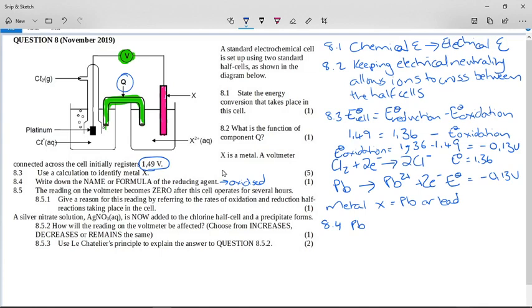8.5 says the reading on the voltmeter becomes zero after the cell operates for a few hours. Give a reason for this reading by referring to the rates of oxidation and reduction half reactions. Now I drew this with a forward arrow, but as you know from the table all of these are reversible reactions and so all reversible reactions can reach equilibrium. When this reaches equilibrium, the forward rate equals the rate of the backward reaction. So the rate of oxidation is equal to the rate of reduction. The reaction has reached equilibrium.